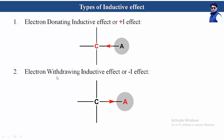Second is the electron withdrawing inductive effect, or minus I effect. Similarly, there is a bond between a carbon atom and atom A. Here A is an electronegative atom that withdraws electron density from the carbon atom. As a result, the electron density around the carbon atom decreases while the electron density around atom A increases.